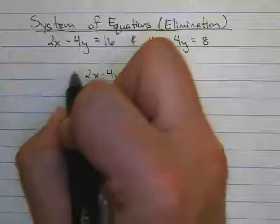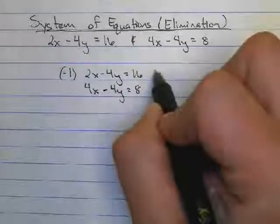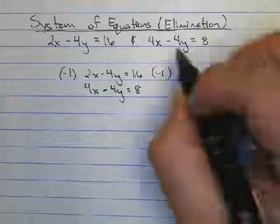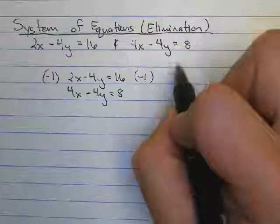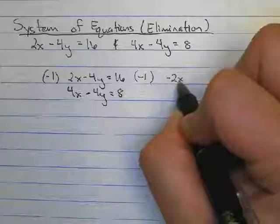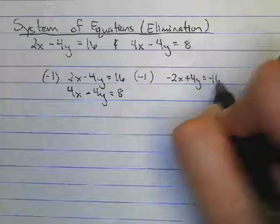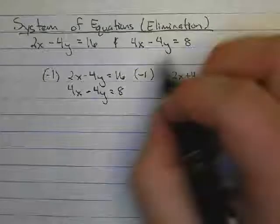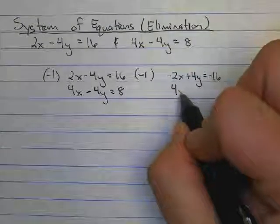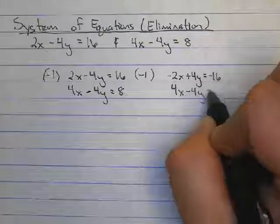So maybe I can just multiply this top one by negative 1. When I do that I get negative 2x plus 4y equals negative 16 and my other equation will stay the same 4x minus 4y equals 8.